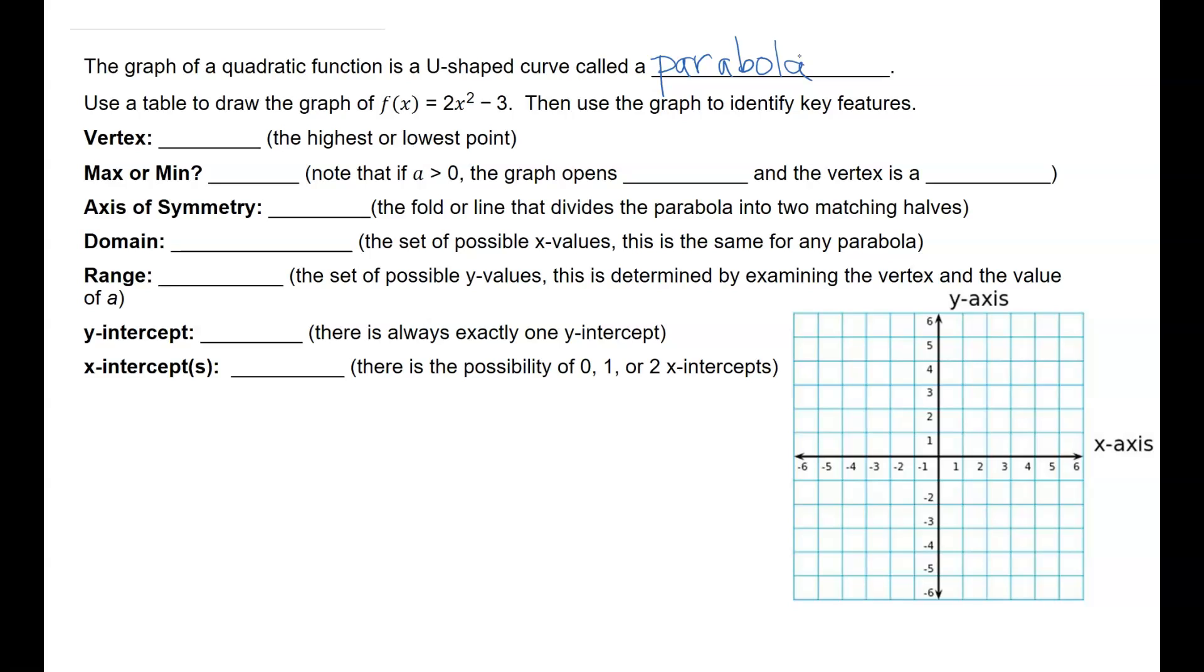We're going to use a table to draw 2x squared minus 3. So I'm going to start by making my table. This right here is the equation that I am trying to graph. So I am going to do a negative 2, a negative 1, 0, and 1 for sure. So if I plug in a negative 2, negative 2 squared is 4, 4 times 2 is 8, 8 minus 3 is 5.